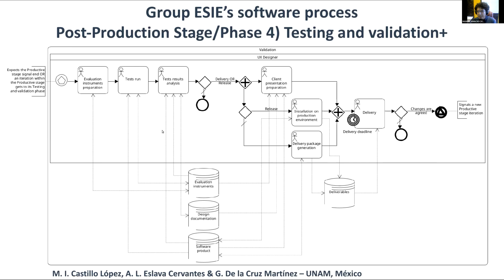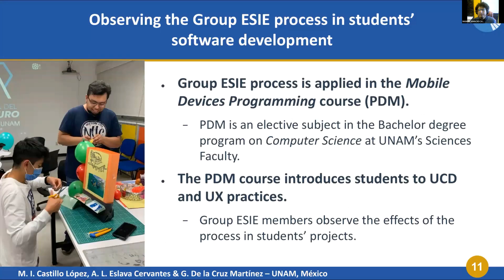When the iteration includes a portion of the final release, the closing phase begins and a presentation for the client is prepared. Depending on agreements, delivery can also happen or the product can be installed into its production environment. In the end, new agreements can be reached to start a new productive stage so we can produce a new version of the product.